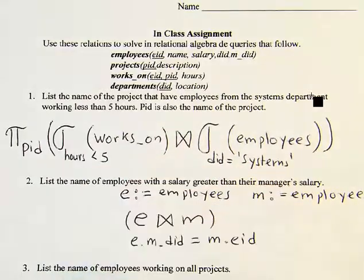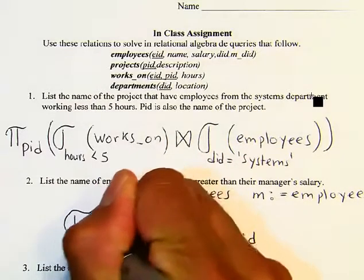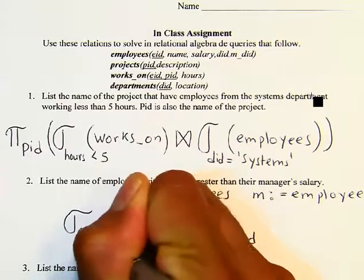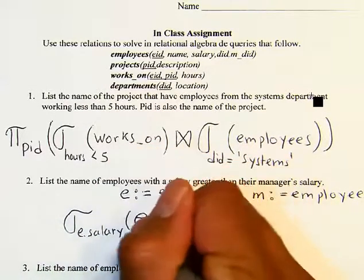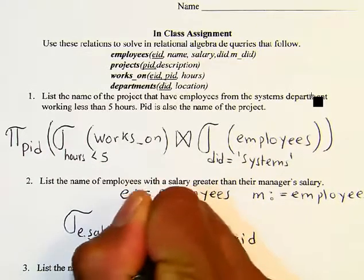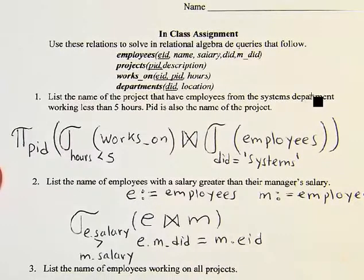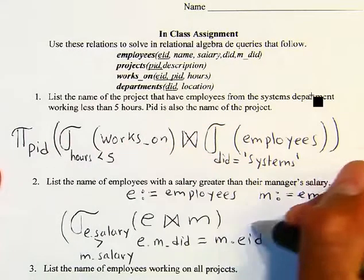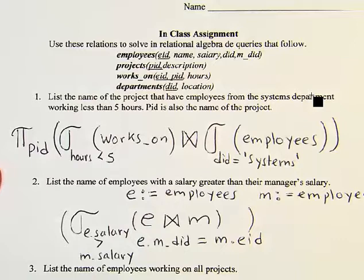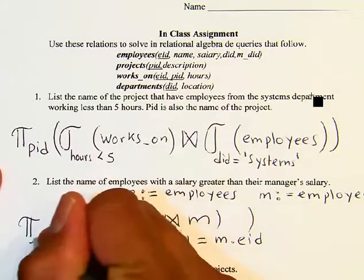From this join, we apply a selection where the employee's salary is greater than the manager's salary. Once we have that, we project onto the employee name to get the answer for query two.